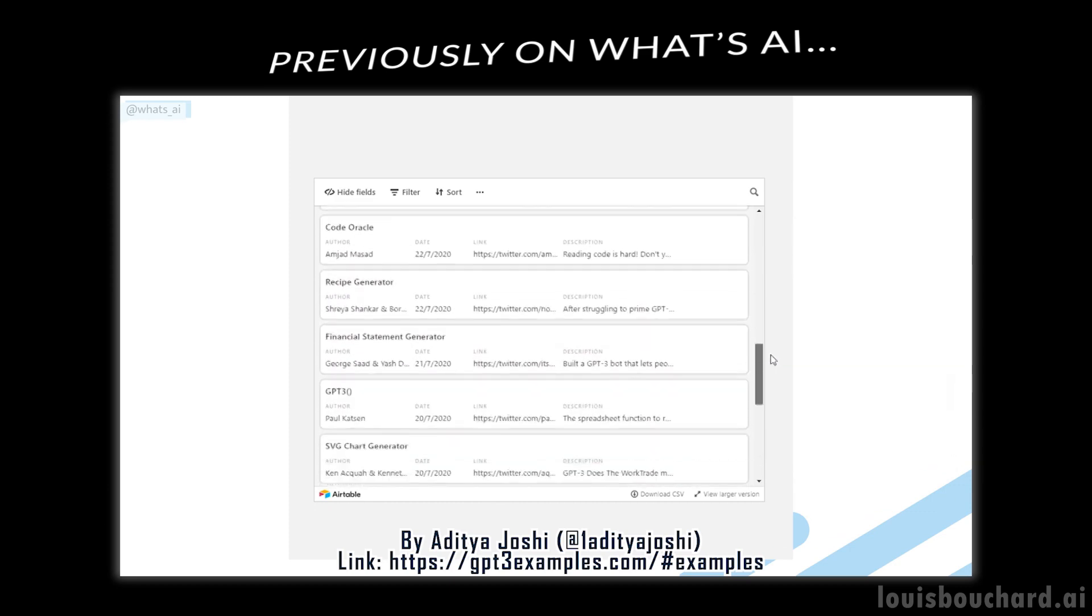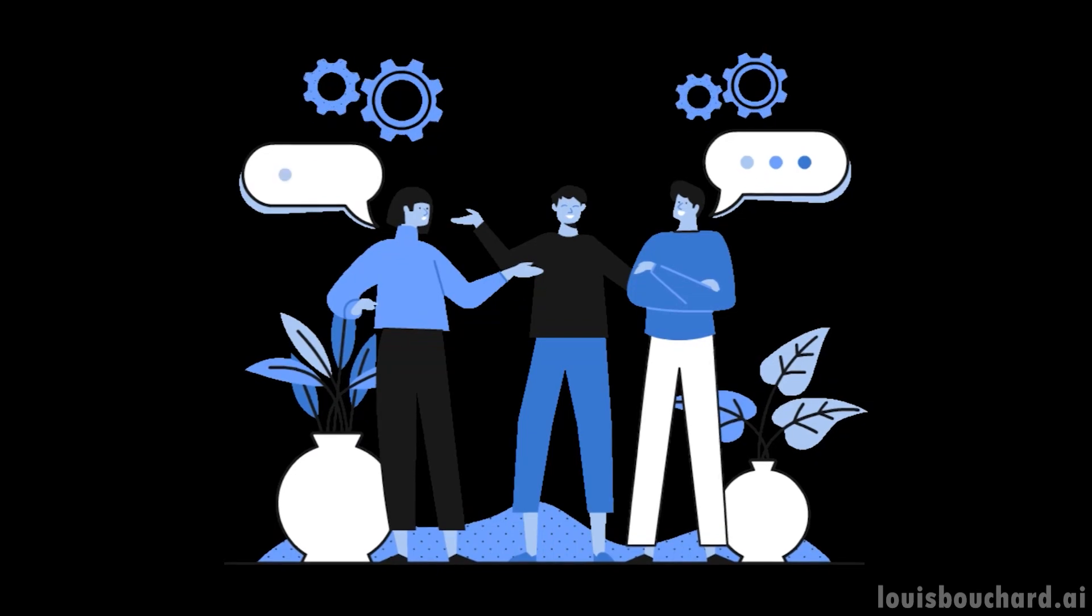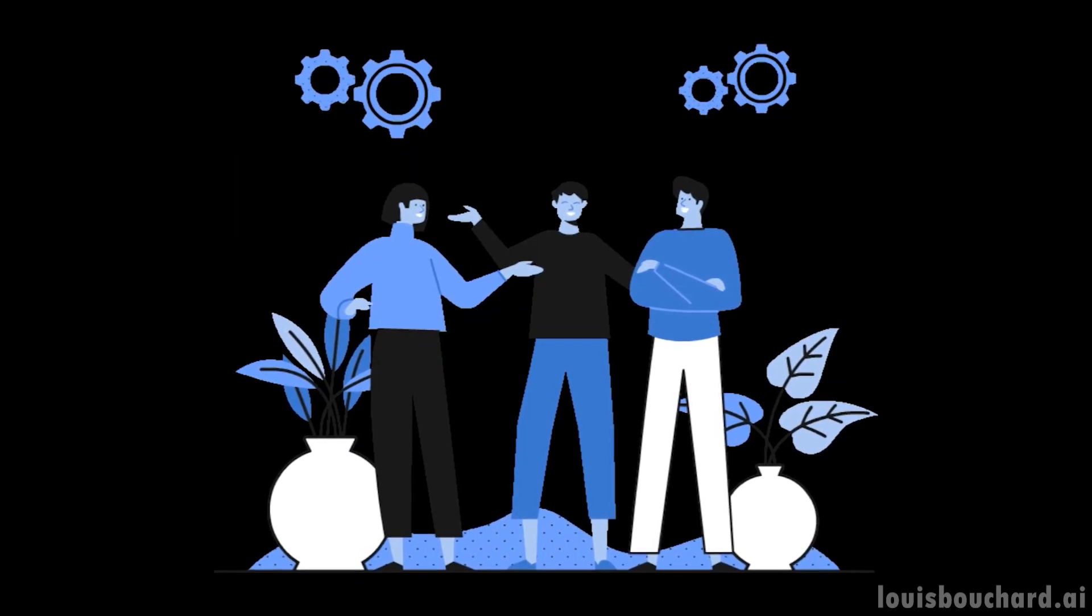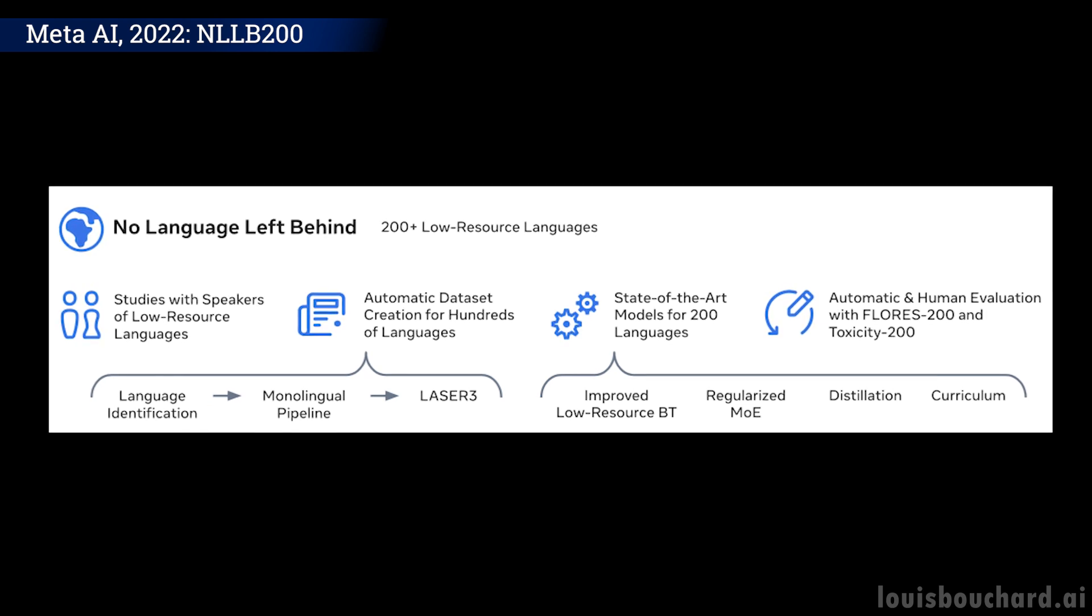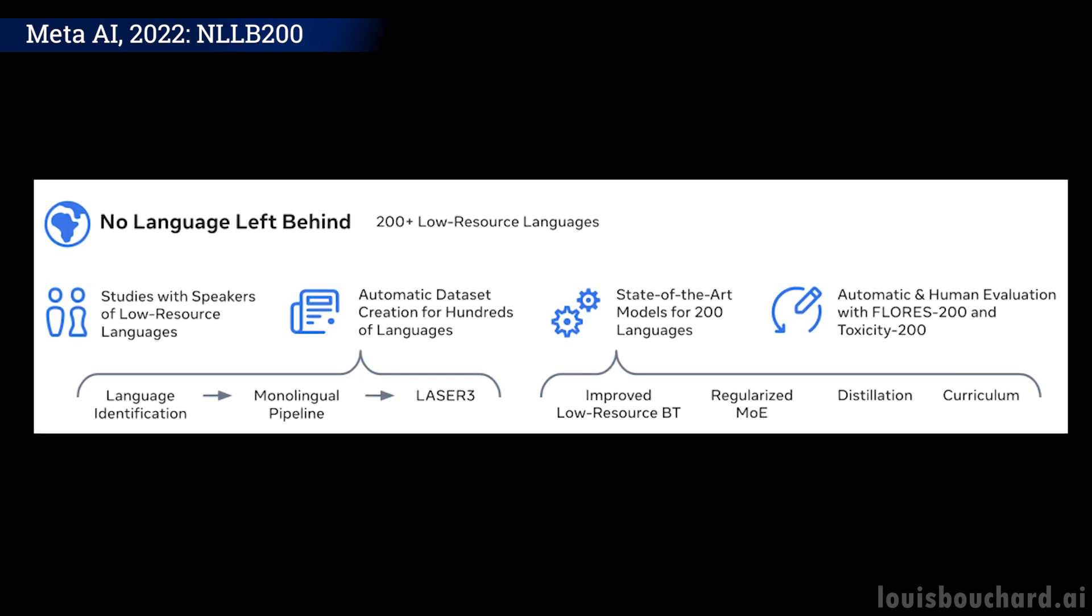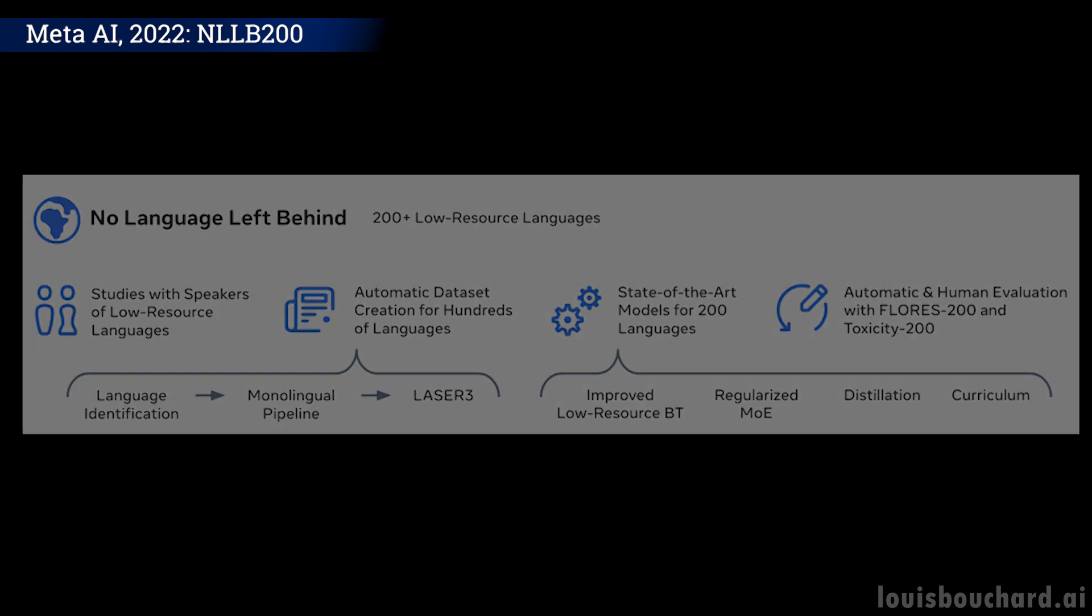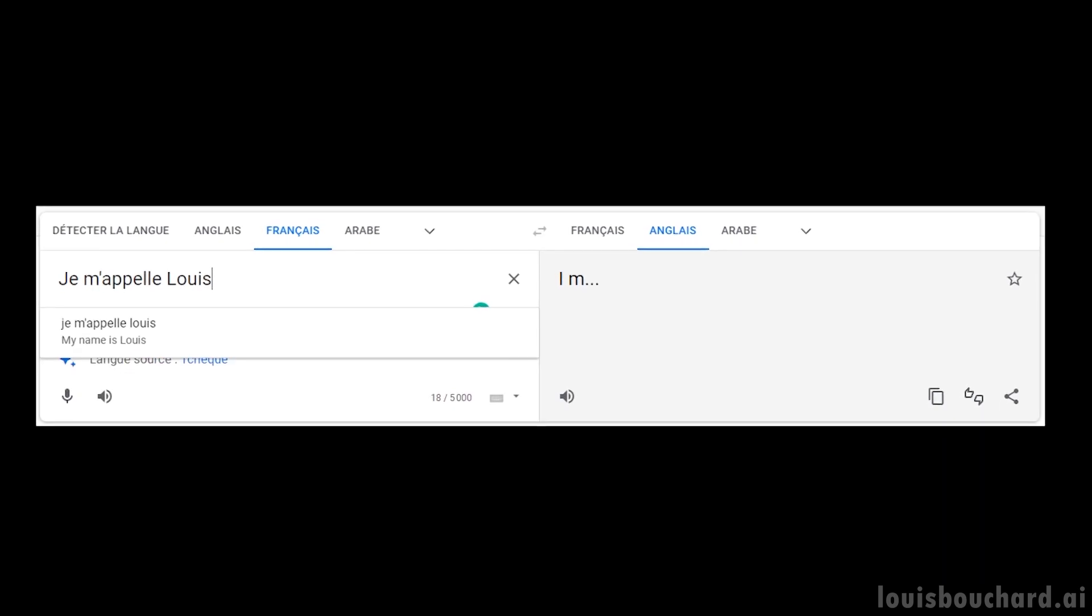This language barrier hurts billions of people willing to share and exchange with others without being able to. Once again, AI can be used for that too. Meta AI's most recent model called No Language Left Behind does exactly that. It translates across 200 different languages with state-of-the-art quality.